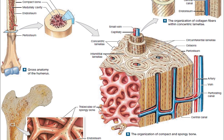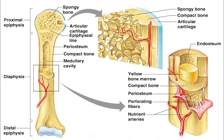The largest bone in the body is the femur, or thighbone, and the smallest is the stapes in the middle ear. Also, bone is not uniformly solid, but consists of a flexible matrix — about 30% — and bound minerals — about 70% — which are intricately woven and endlessly remodelled by a group of specialized bone cells.